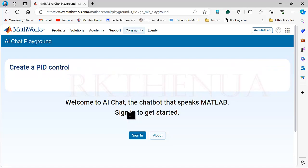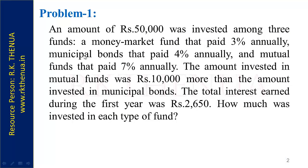So we start with our first problem: an amount of $50,000 was invested among three funds — a money market fund that paid 3% annually, a municipal bonds fund that paid 4% annually, and a mutual fund that paid 7% annually. The amount invested in mutual funds was $10,000 more than the amount invested in municipal bonds. The total interest earned during the first year was $2,650. How much was invested in each type of fund? You can see we need to build and solve some equations here.